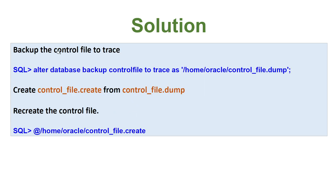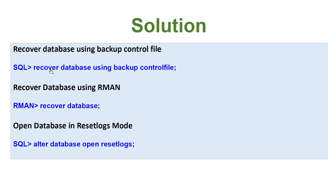The fix is: first, backup the control file to trace — you run 'ALTER DATABASE BACKUP CONTROL FILE TO TRACE' and give a location, creating a file called create_control_file. You then copy this file and edit it so you can recreate the control file. Once that is done, you recover the database using backup control file, then recover the database using RMAN, and finally open the database in RESETLOGS mode.